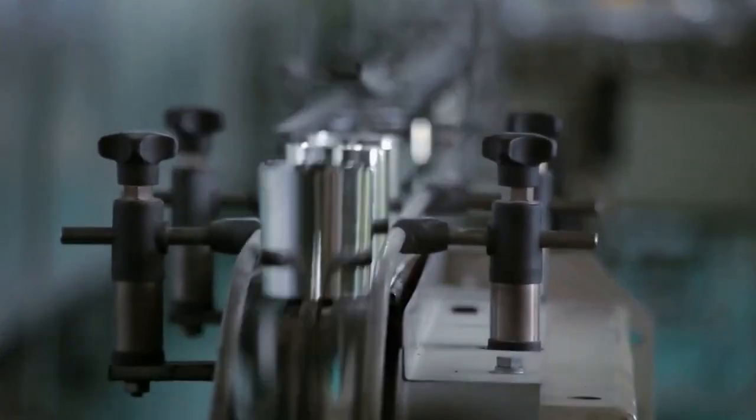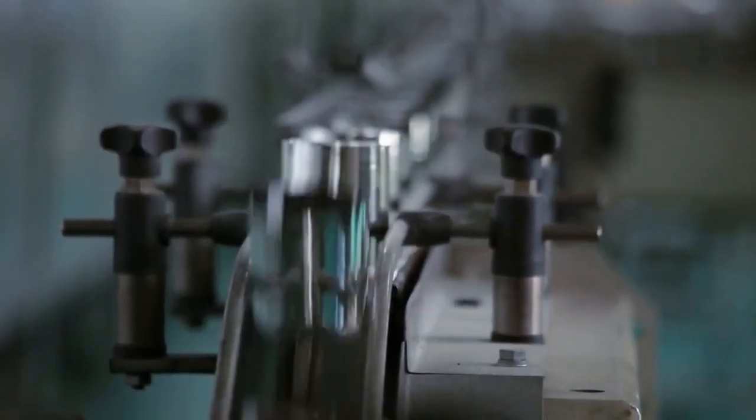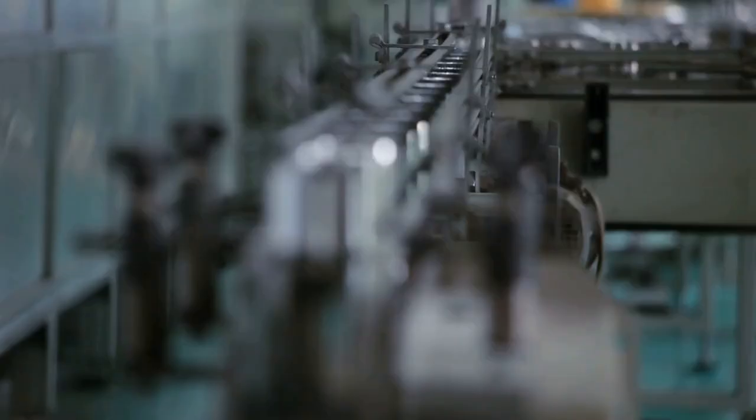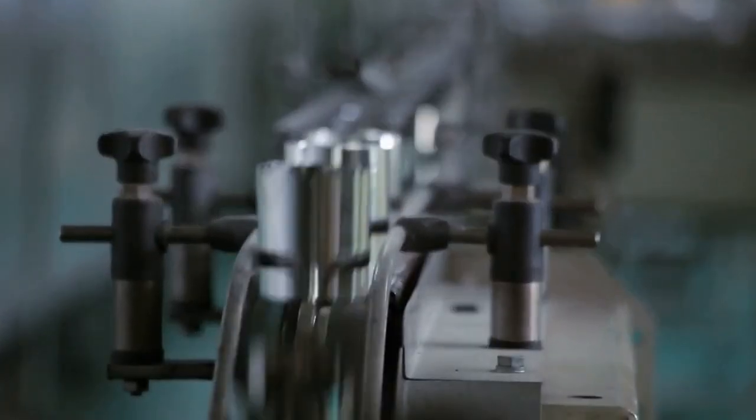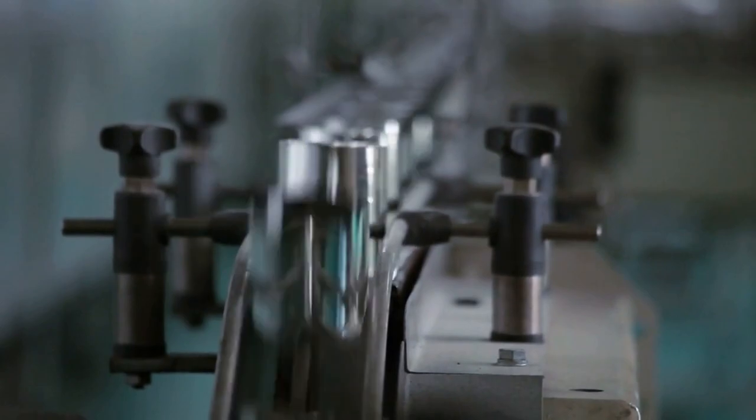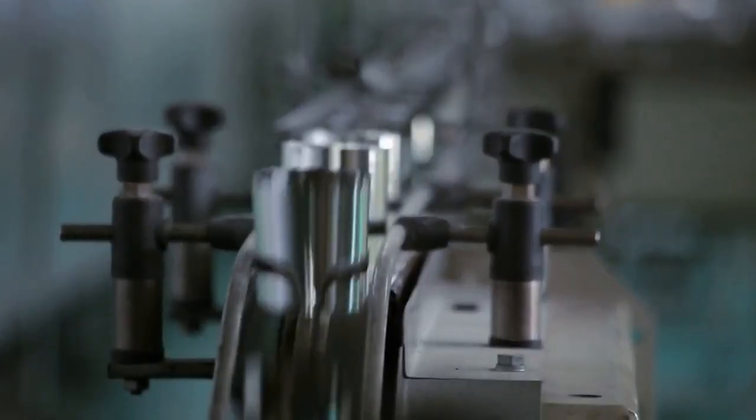In a typical soda can filling line, the cans move down a conveyor belt at a speed of around 2,000 cans per minute. That means each can spends less than a second at each stage of the filling process, which is a testament to the precision and efficiency of the production line.